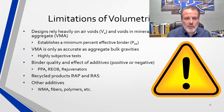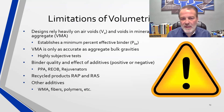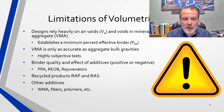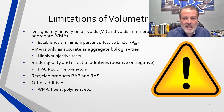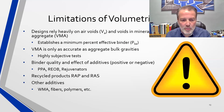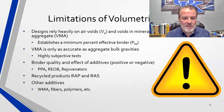Limitations of volumetric mix design include heavy reliance on air voids and VMA to establish minimum effective binder content. VMA is only as accurate as aggregate bulk gravities. Binder quality and effective additives can be good or bad depending on the combination of materials — and this gets complicated. The laymen, and even some folks in our industry, may not fully grasp the combinations of materials that can vary on a daily basis that we as technologists have to make work. Recycled products were not addressed in the original volumetric mix design, nor were fibers, polymers, or warm mix additives.